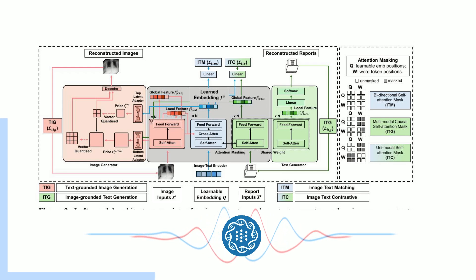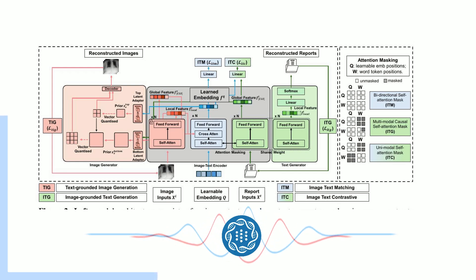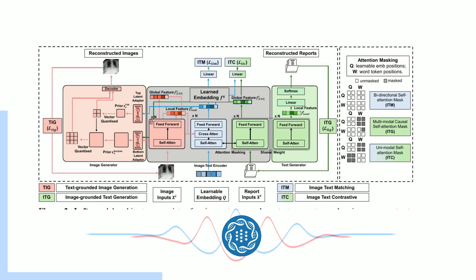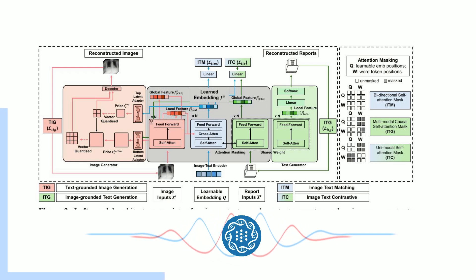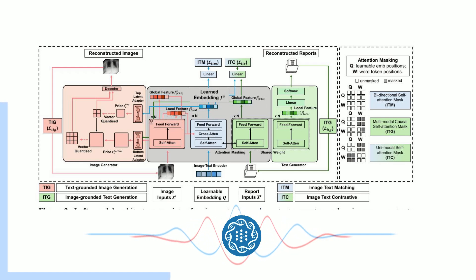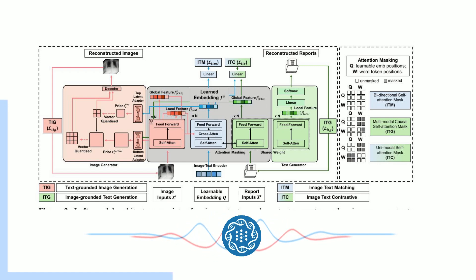The first objective is image-text contrastive learning. Think of it like a massive matching game — the AI is given tons of medical images and reports and has to learn to match them correctly. So it's learning those basic connections between what it sees in an image and the corresponding medical description, building a visual vocabulary, if you will.